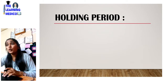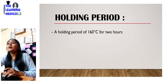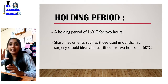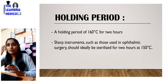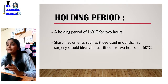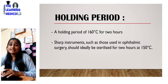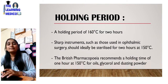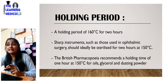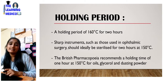First, what is the holding period? The holding period is about 160 degrees Celsius for 2 hours — for sharp instruments such as those used in ophthalmic surgery. We heat it to 150 degrees Celsius for oils, glycerols, and dusting powder.